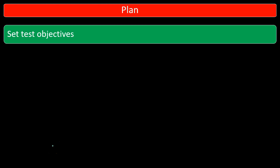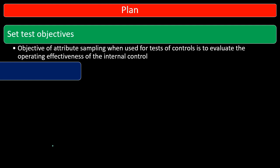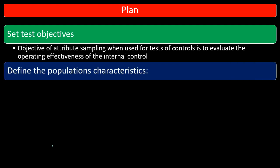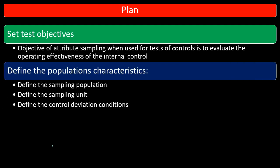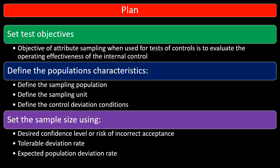Within planning, we will set test objectives. The objective of attribute sampling when used for tests of controls is to evaluate the operating effectiveness of internal controls. We will define the population's characteristics, including defining the sampling population, the sampling unit, and the control deviation conditions. Next, we will set the sample size using the desired confidence level or risk of incorrect acceptance, tolerable deviation rate, and expected population deviation rate.